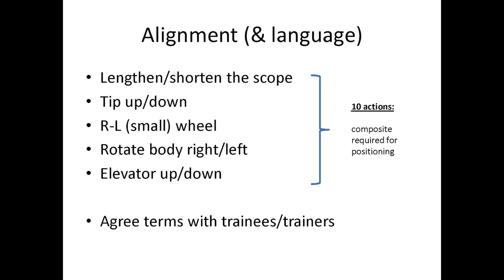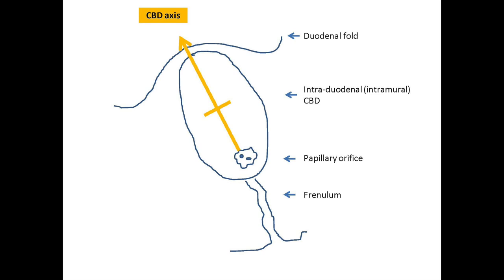This diagram demonstrates the key areas we'll be concentrating on at ERCP. You can see the superior duodenal fold and the bulge of the intra-duodenal or intramural portion of the common bile duct, which defines the axis of the common bile duct within the duodenum. You can see the papillary orifice which often has a common entry, or in this case two separate entries for the common bile duct and the pancreatic duct. Below the ampullary and papillary complex is an elongated frenulum which can often guide us back to the papilla if we've entered too distally into the duodenum.